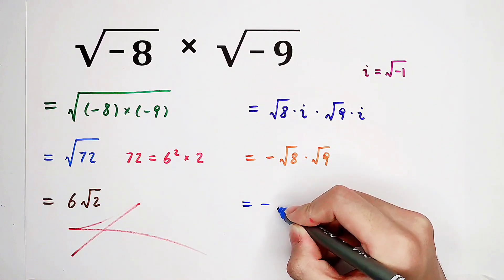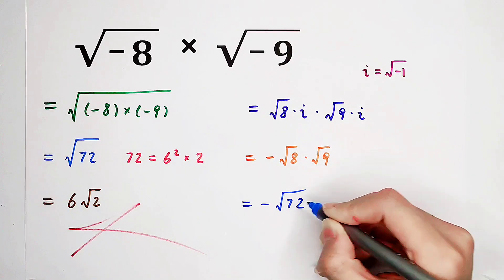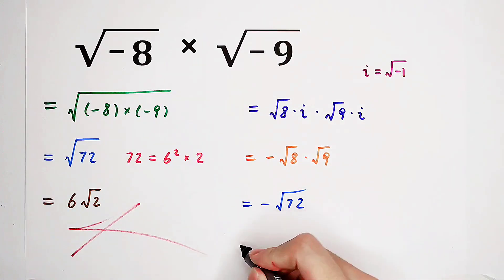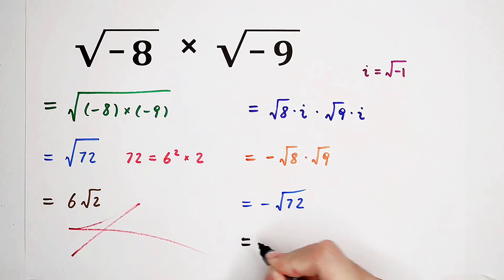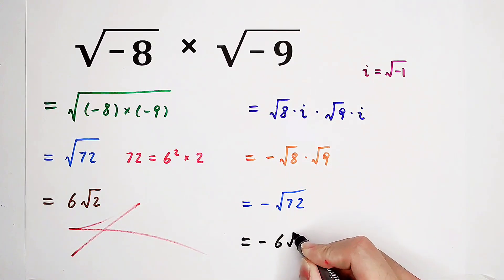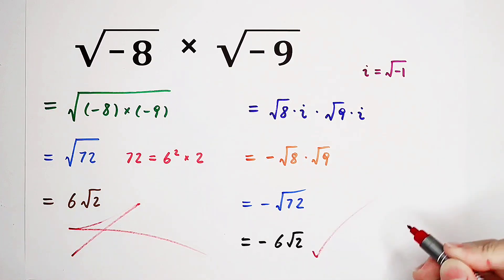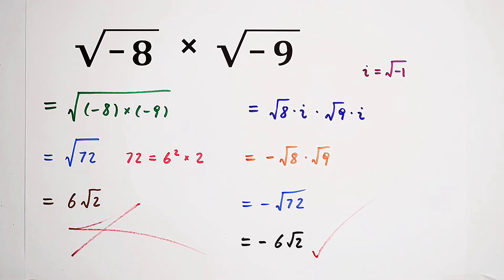It is negative square root of 72, and the answer will be negative 6 root 2. And this time it's correct. Do you get it? Do you get the method? Do you get the mistake?